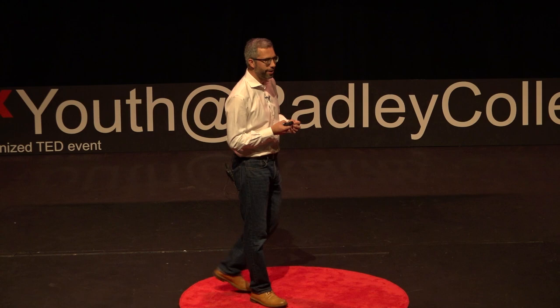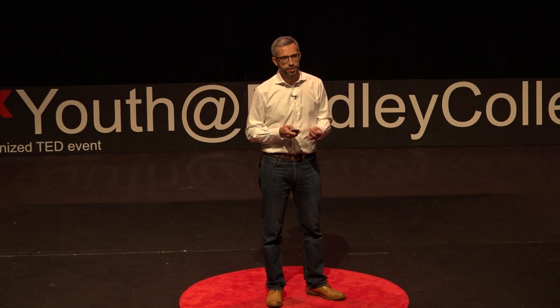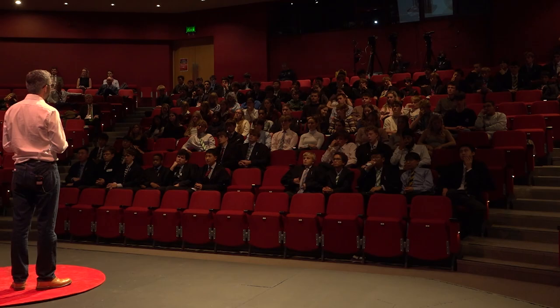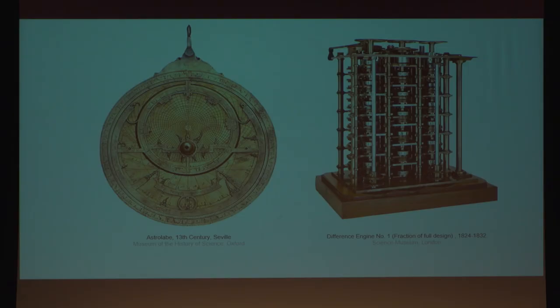A few thousand years later, after the first astrolabe, Charles Babbage developed another type of application-specific computer based on mechanics. His design was made in order to calculate the values of logarithms and trig functions, and it was called the difference engine. The design involved 25,000 moving parts and would have weighed over four tons, but only a tiny fraction of it was ever built. Babbage even went on to develop a universal, general purpose programmable computer, but it was so complex it never got off the drawing board.